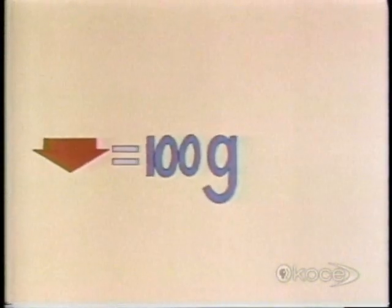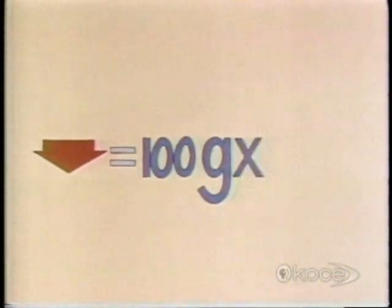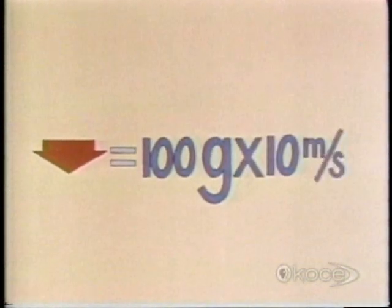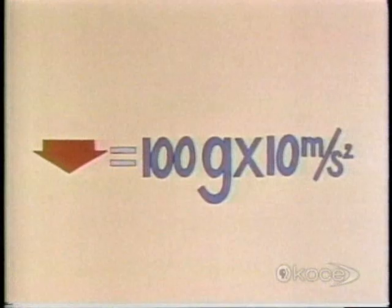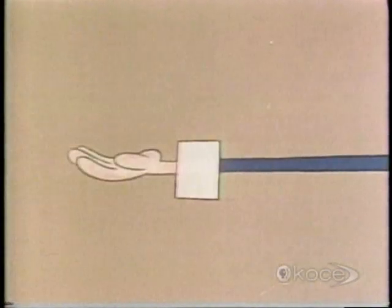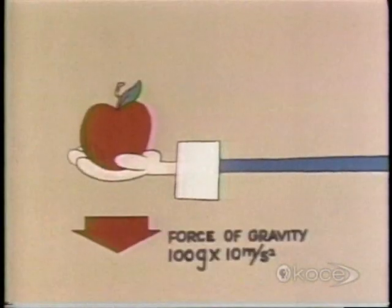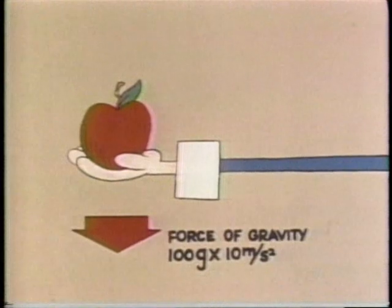So we can now finish our calculation. The force of gravity pulling the apple down is 100 grams times 10 meters per second per second. And if you want to stop the apple falling, your hand must balance